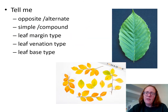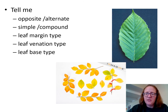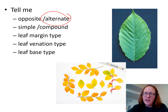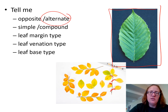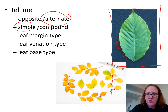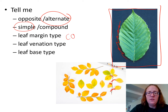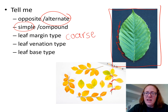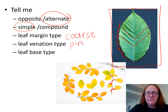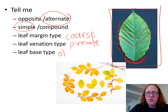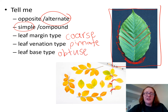Next we have American beech. Looking at the picture, one leaf comes off on the right, one on the left, alternating — so this one is alternate. This picture shows one leaf, so we know it's simple. For the margin, you can definitely see the teeth — they're larger teeth — so this is coarsely toothed. The venation starts in the middle and goes straight out, so it's pinnate. And the base type is pretty rounded, so we're going to say that's obtuse. There's American beech.